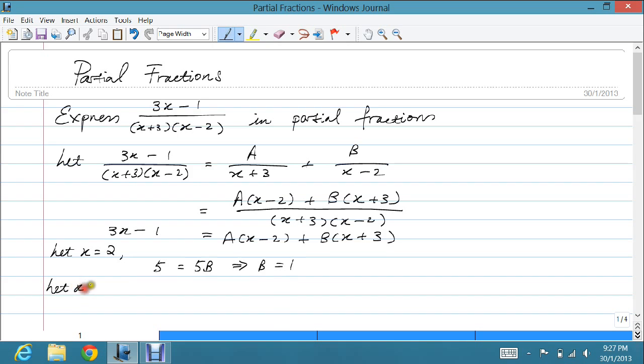Similarly, I let x equal -3. That will give me -9 - 1 = -10 on the left hand side. On the right hand side, I get -5A, since -3 + 3 = 0. So I get A = 2.